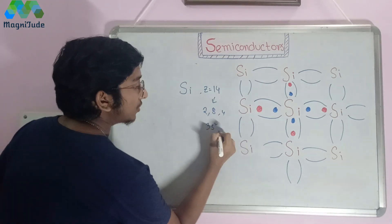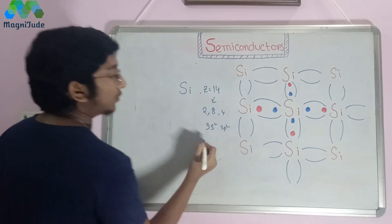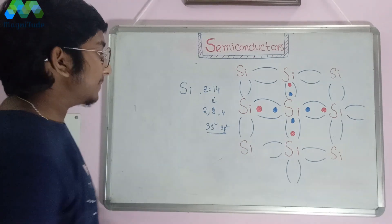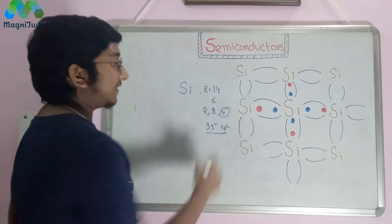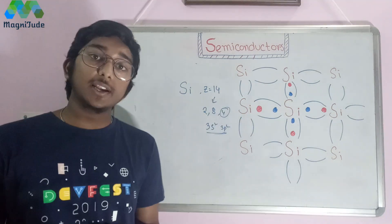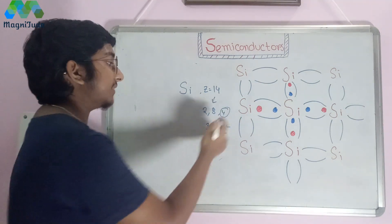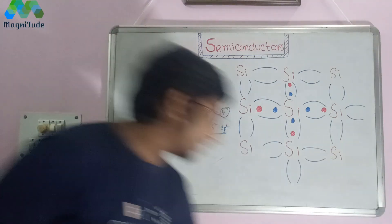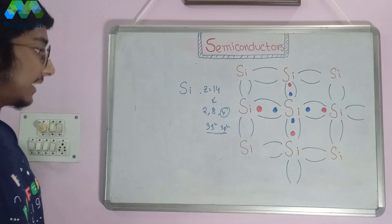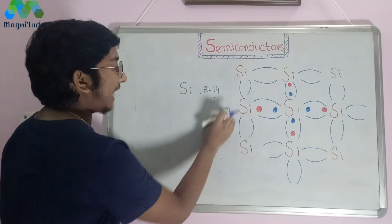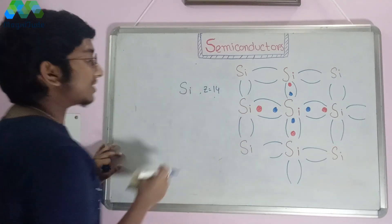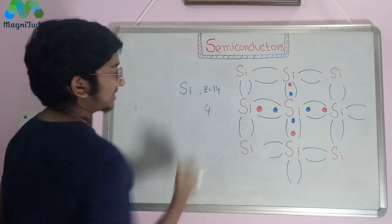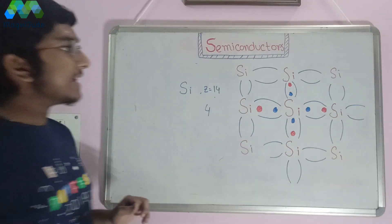From the concepts of class 11 and 12, we can write the last part as 3s² 3p². The last shell of the electronic configuration is known as the valence shell. So the valence shell of silicon consists of only four electrons — meaning the outermost shell of silicon has four electrons.